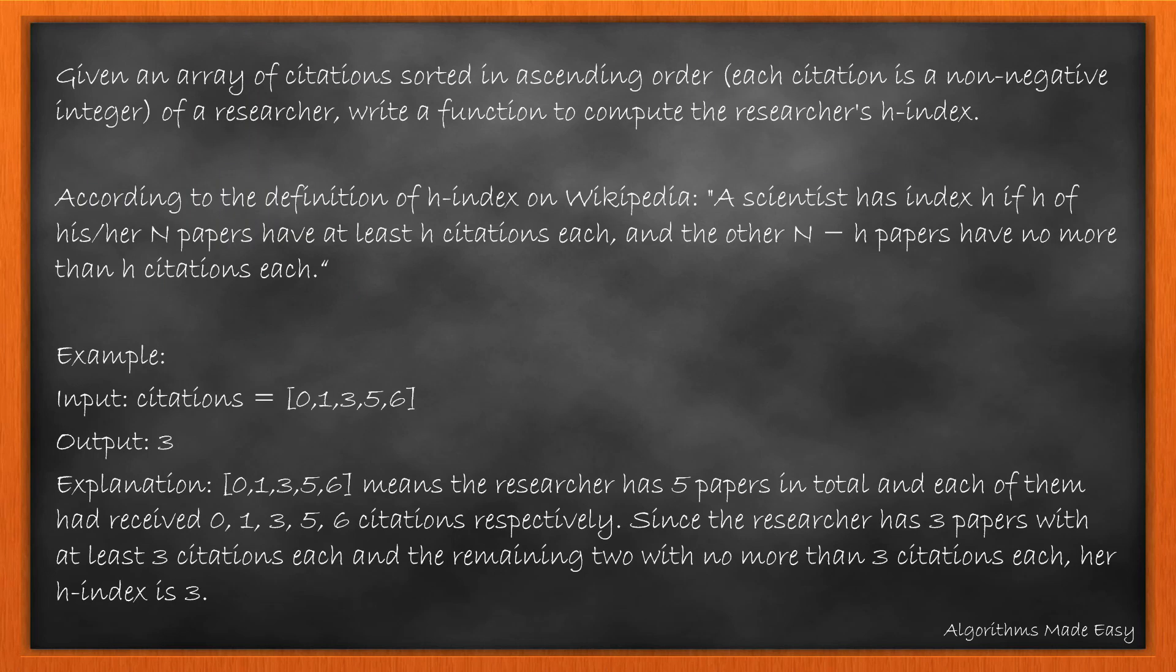Given an array of citations sorted in ascending order where each citation is a non-negative integer, write a function to compute the researcher's H-index. A scientist has an index H if H of his or her N papers have at least H citations each and the other N-H papers have no more than H citations each.